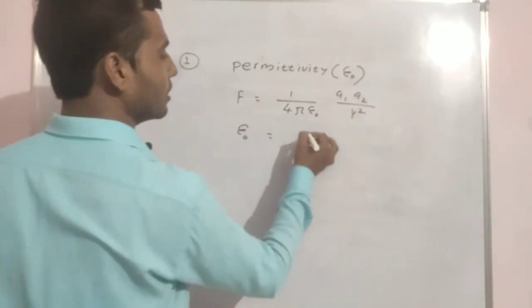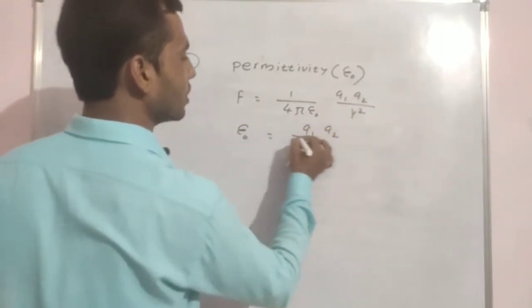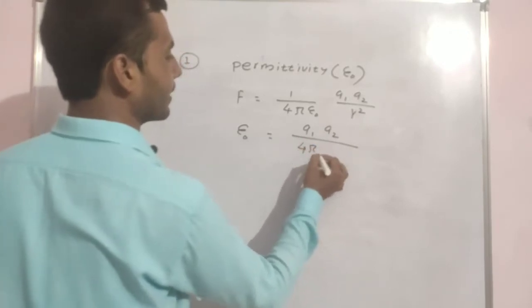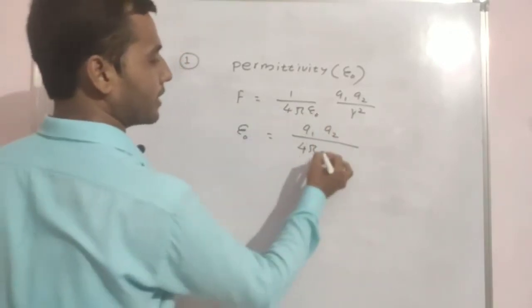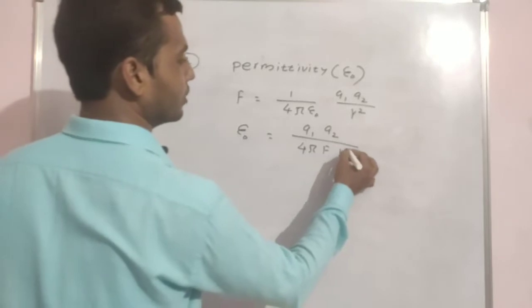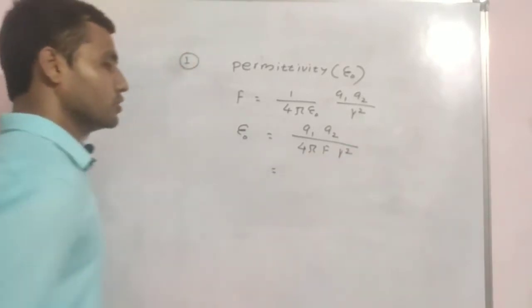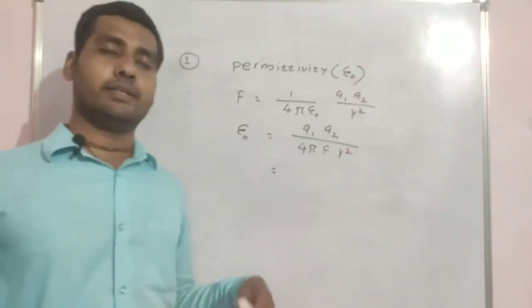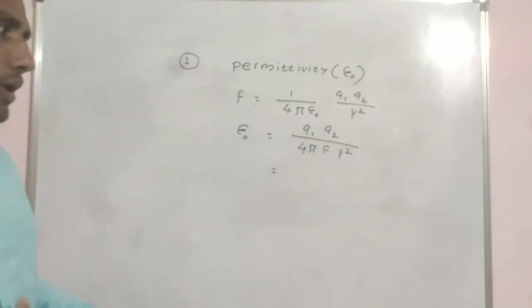So epsilon 0 is equal to, so I will write this q1 q2 upon 4 pi. So basically, this 4 pi is a numerical value, this is not a dimension.